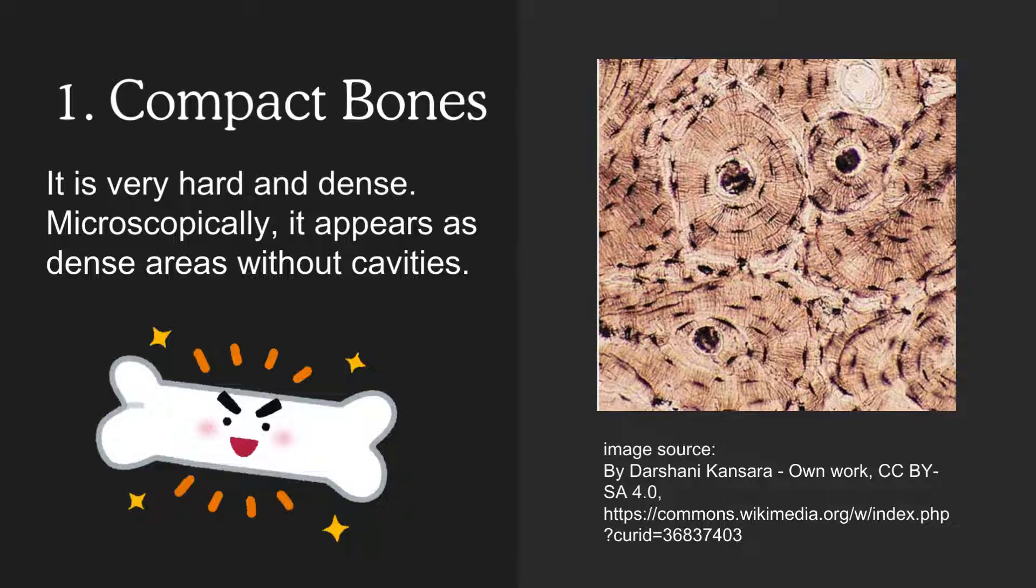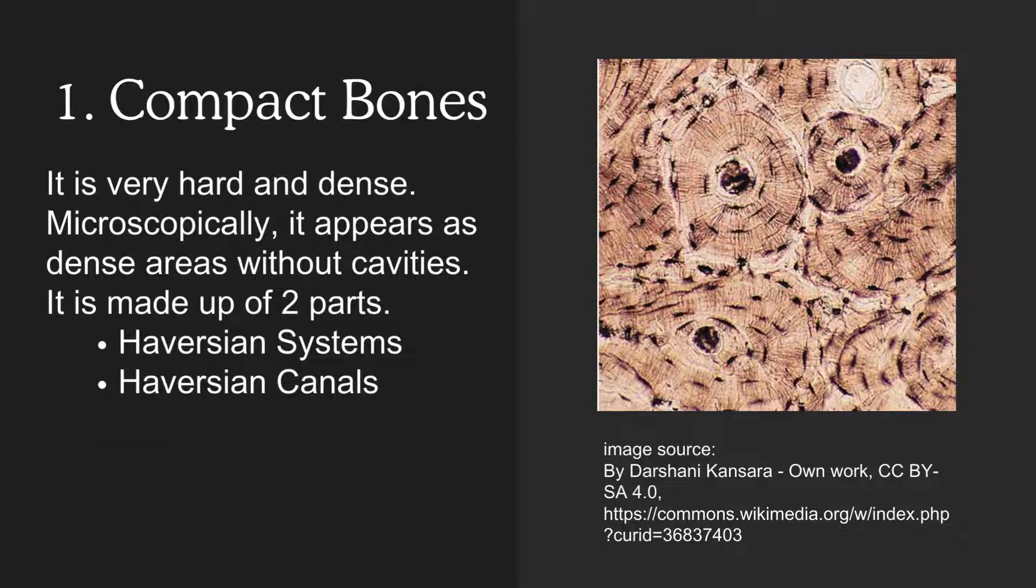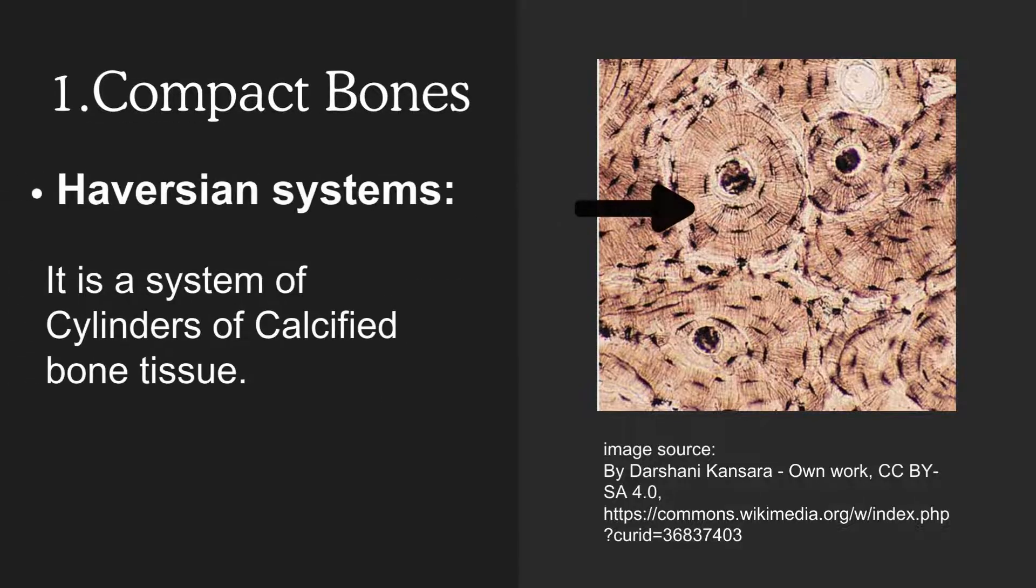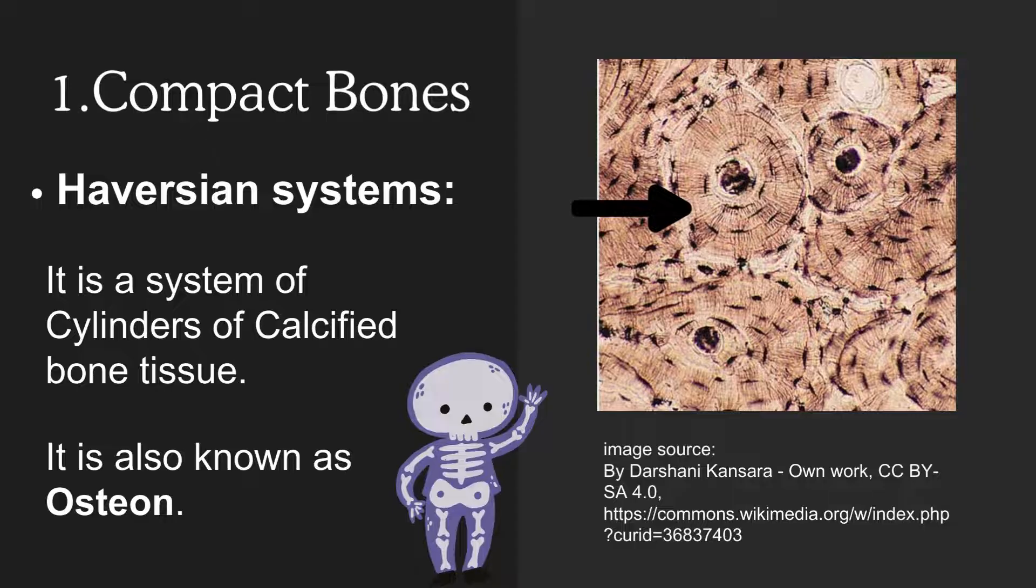It is made up of two parts: Haversian systems and Haversian canals. What are Haversian systems? It is a system of cylinders of calcified bone tissue. It is also known as osteon.